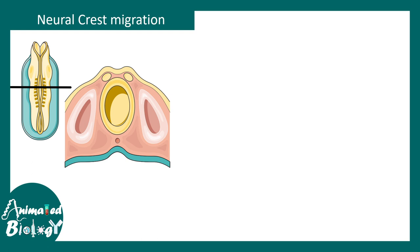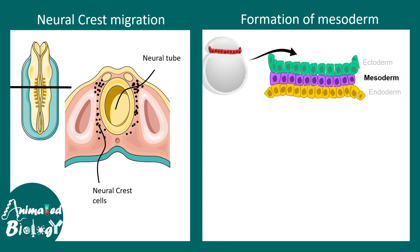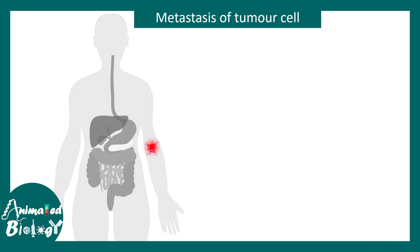EMT can occur during development — it happens in the neural tube, where after the neural tube is closed, certain cells known as neural crest cells undergo EMT and migrate out. Layer formation such as mesoderm formation also requires this type of EMT transition. Biological processes like wound healing also require EMT molecular programs.